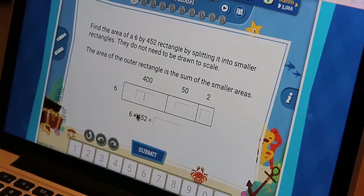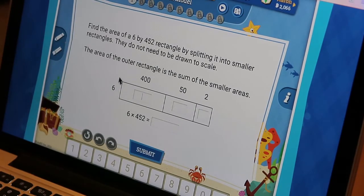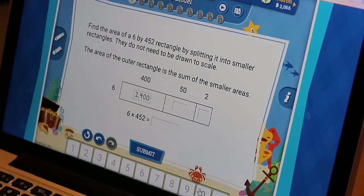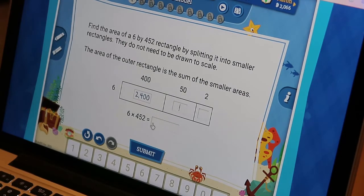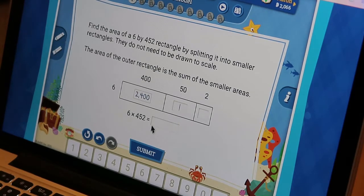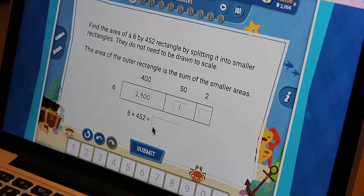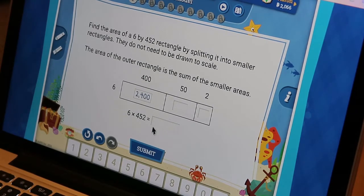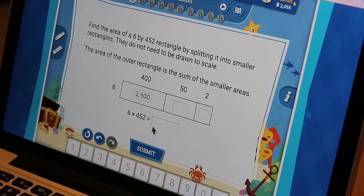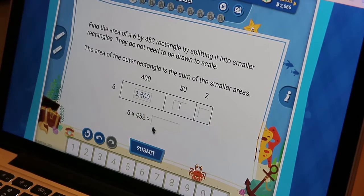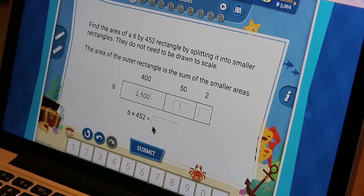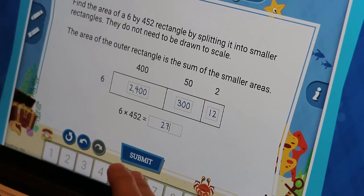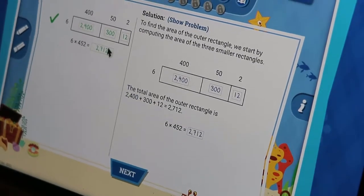Personally, I really like that guy. I find that he explains everything in a very easy way, and sometimes he's pretty funny. Okay, so now Erin has to do it himself. It says find the area of a 6 by 452 rectangle by splitting it into smaller rectangles. They do not need to be drawn to scale. The area of the outer rectangle is the sum of the smaller areas. So what they're doing is teaching him different ways to multiply a three-digit number by a one-digit number instead of doing it the long way that probably most of us learned, writing the entire thing out. So what's 6 times 5? 30. Okay, so then 50 times 6 is? 300.